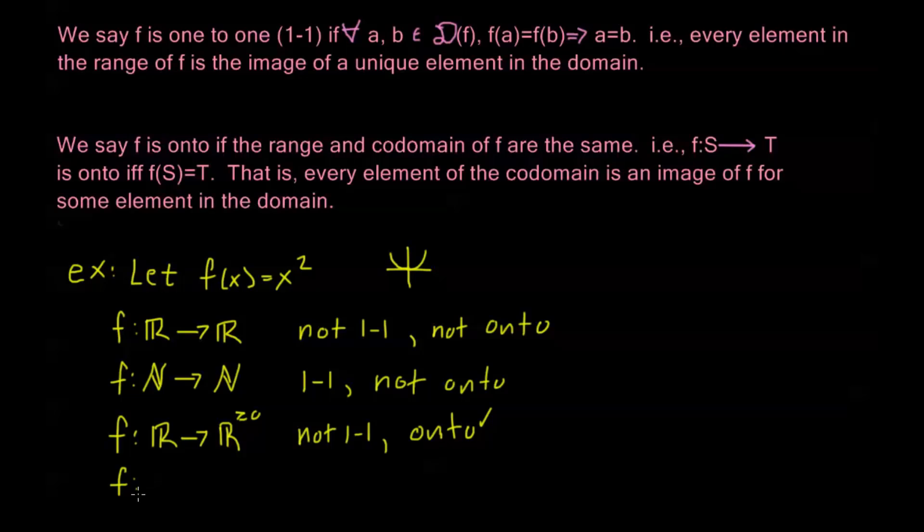One more. What if I define this function from the non-negative reals to the non-negative reals? Now, if I'm only taking the values 0 and up and squaring them, I'm still going to get this half of my graph up here. I'm still going to have my images are going to be all non-negative reals. So this is going to be onto.